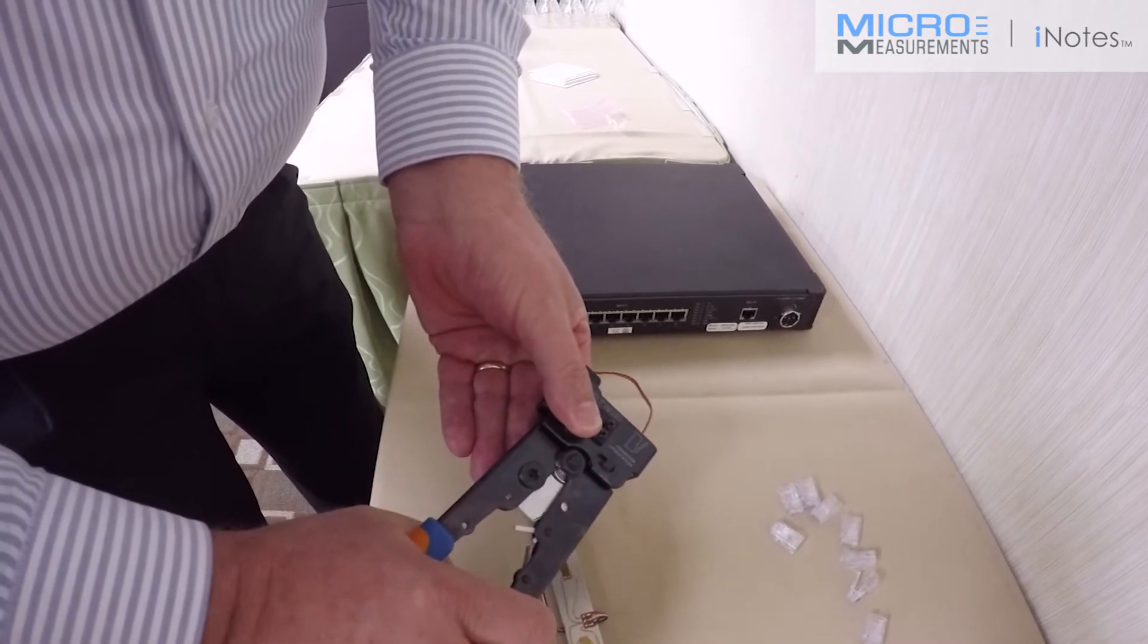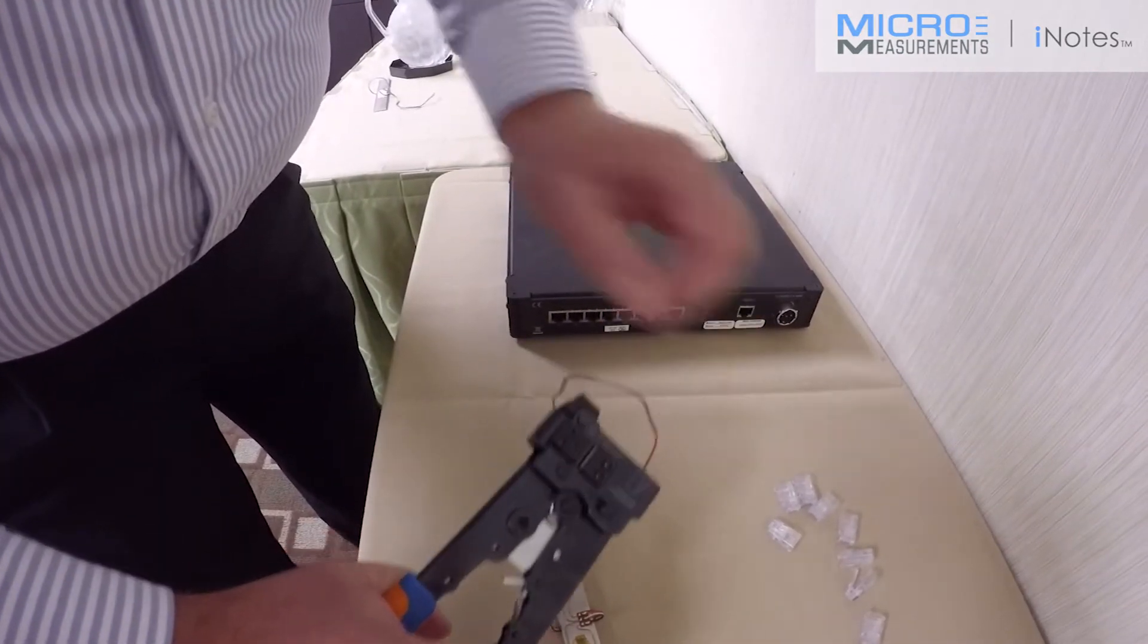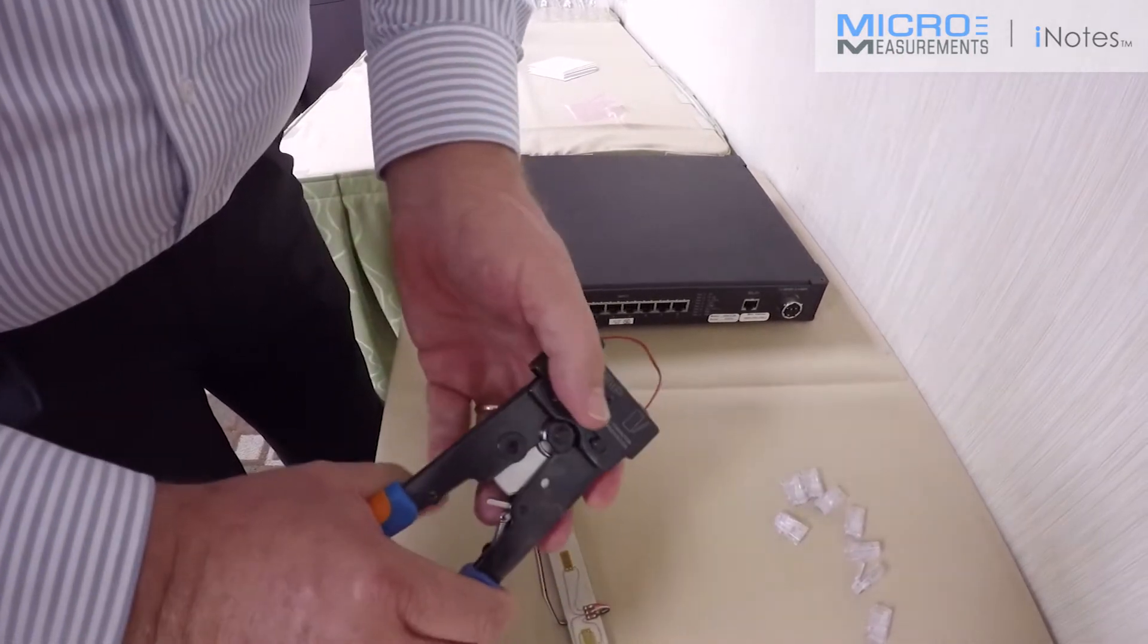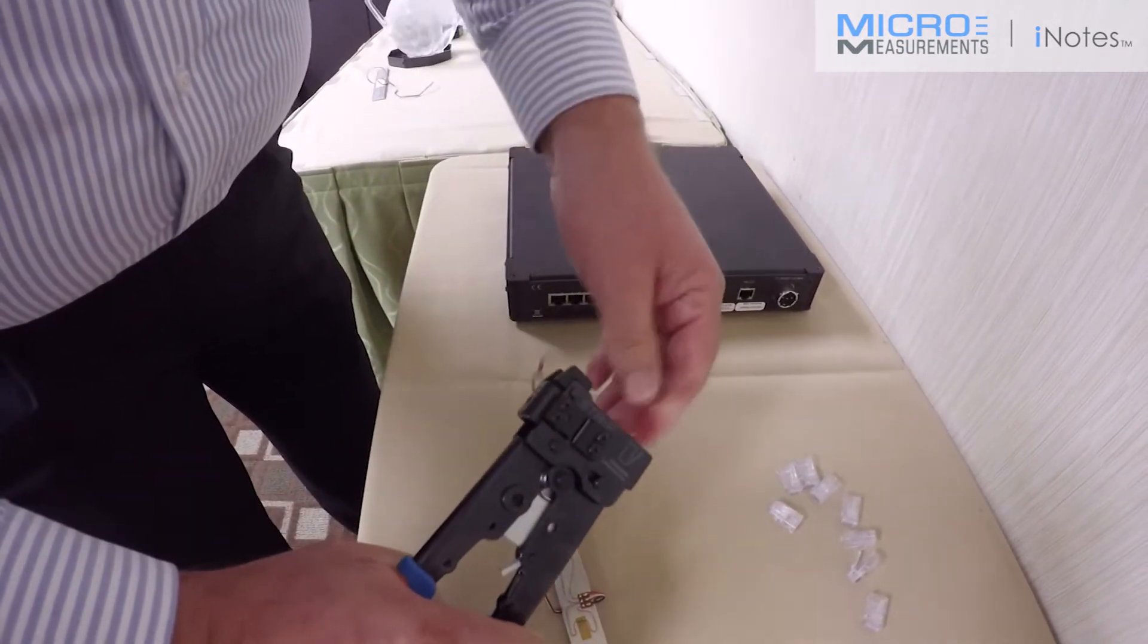crimp it closed. And this is a ratcheting-type crimper. You can't remove the connector if it's improperly crimped. You crimp it all the way down until it unlocks.